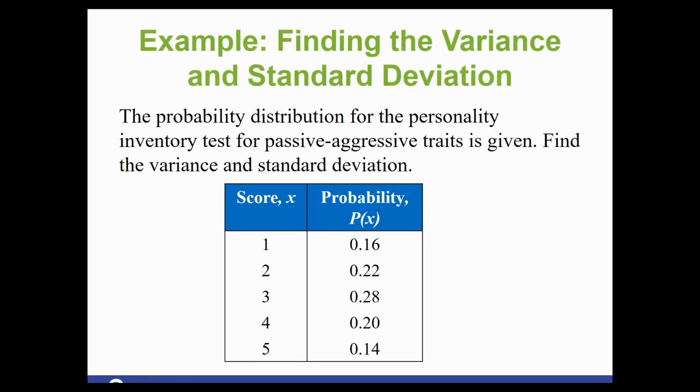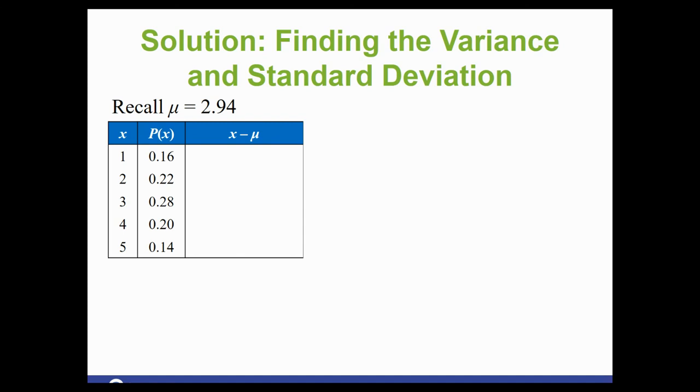So here's that same example. We've got our scores. We now have our probabilities. So the first thing we need to do is find those deviations. Since we have the mean of 2.94, we're going to take each one of our x's. So 1 minus 2.94, and we get negative 1.94.